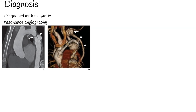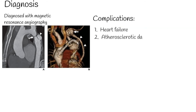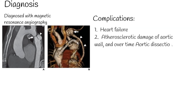Three main problems can arise from coarctation. First, heart failure due to high load caused by aortic narrowing. Second, high load and high pressure before the coarctation cause atherosclerotic damage to the aortic wall, and over time aortic dissection can develop. Third, blood pressure is high on the upper part of the body, which may cause stroke.